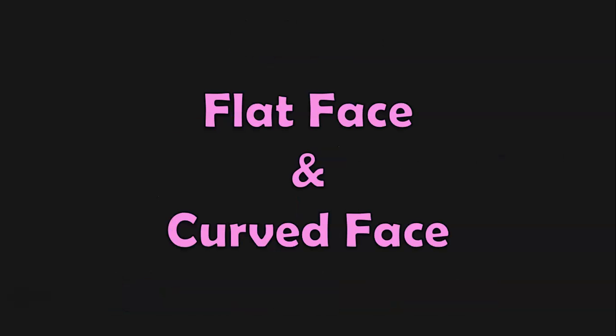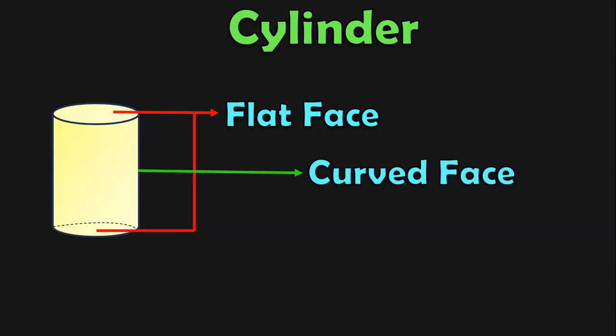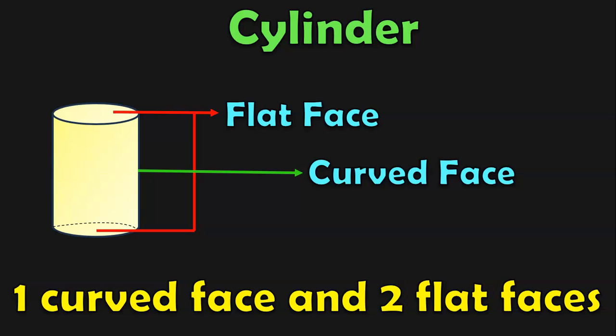Now let us take an example of solid shape that has both flat face and a curved face. This is a cylinder. A cylinder has a bottom and top face which are flat, and the remaining is a curved face. So in a cylinder, there are two flat faces and one curved face.